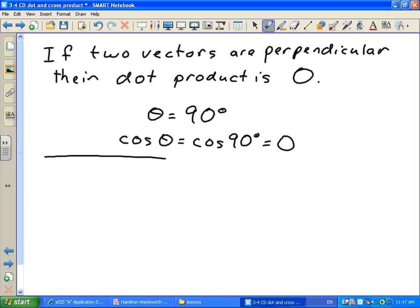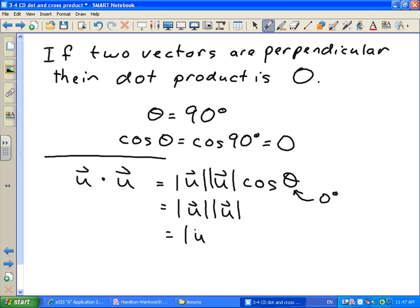Another property is, let's say I have a vector u and I take the dot product of a vector with itself. So I do u dot u. This is going to be magnitude of u times the magnitude of u cosine theta. What's the angle between u and u going to be? Right? Zero degrees. So the cosine of zero is just one. So we end up with this magnitude of u times the magnitude of u or the magnitude of u squared, which is sometimes a useful relation.